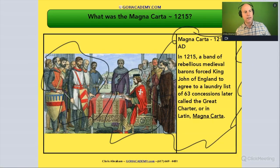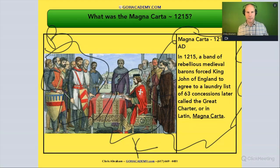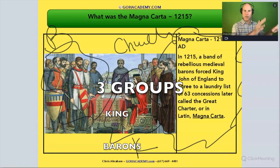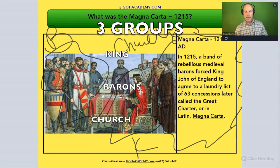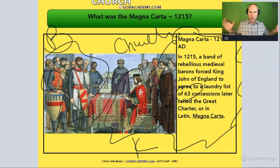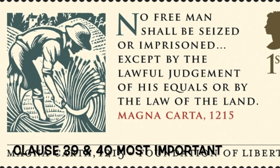There's the king — King John. There's the barons. And who else was there? King John was doing a lot of bad things during that time, and there was also the church. So we have these three groups: the king, the barons, and the church. The king was forced to sign an agreement — a laundry list of concessions. He agreed to 63 concessions.